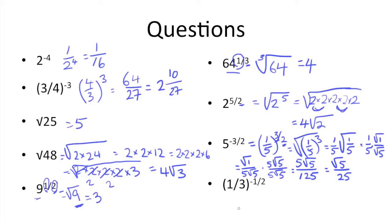The last question is 1/3 to the negative 1/2 power. So what we need to do is take the reciprocal, since it's a negative exponent, and we get 3 to the 1/2 power, and that's just the square root of 3.